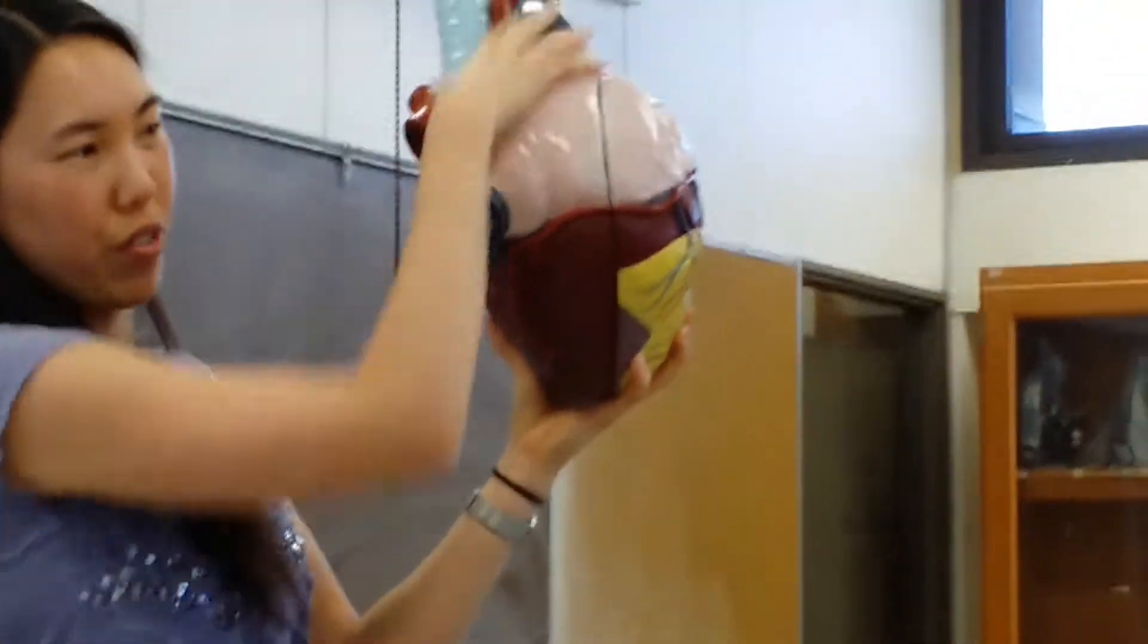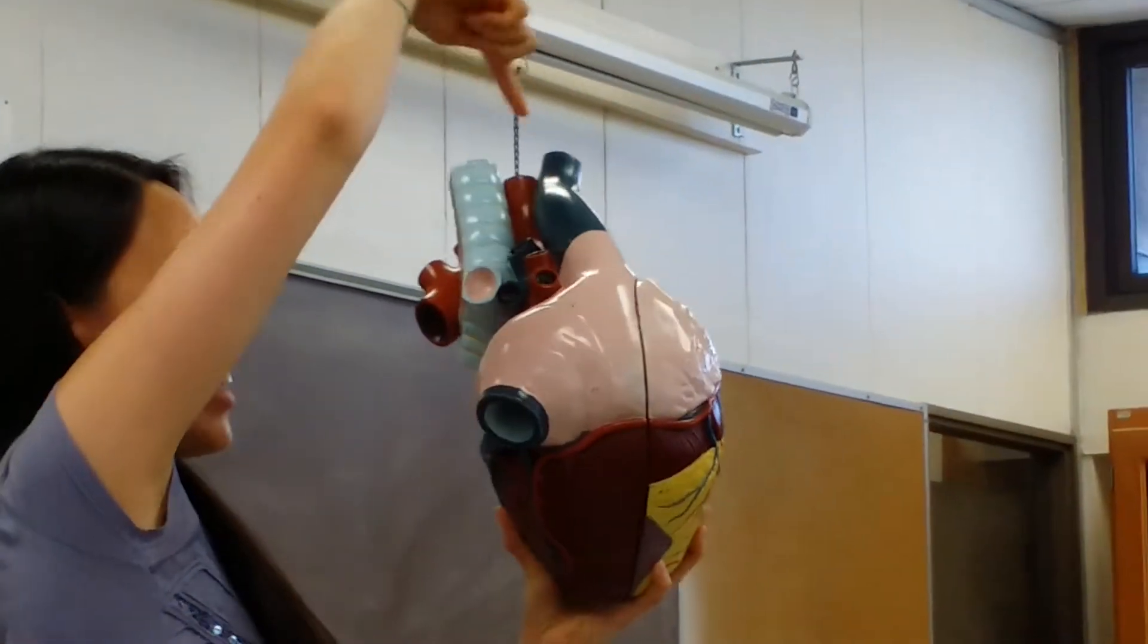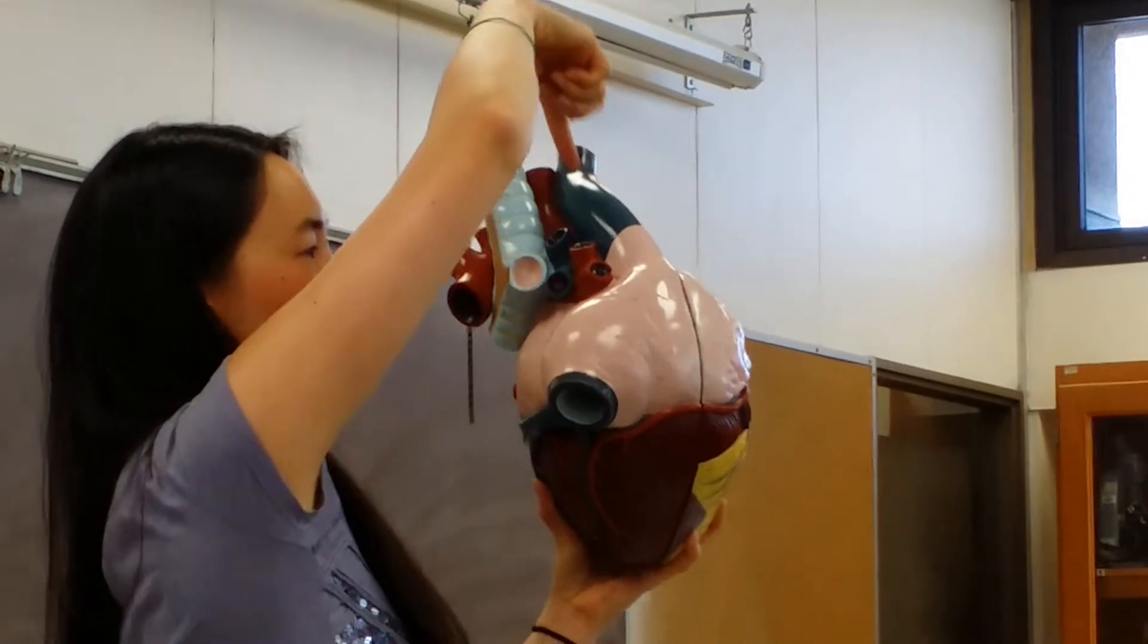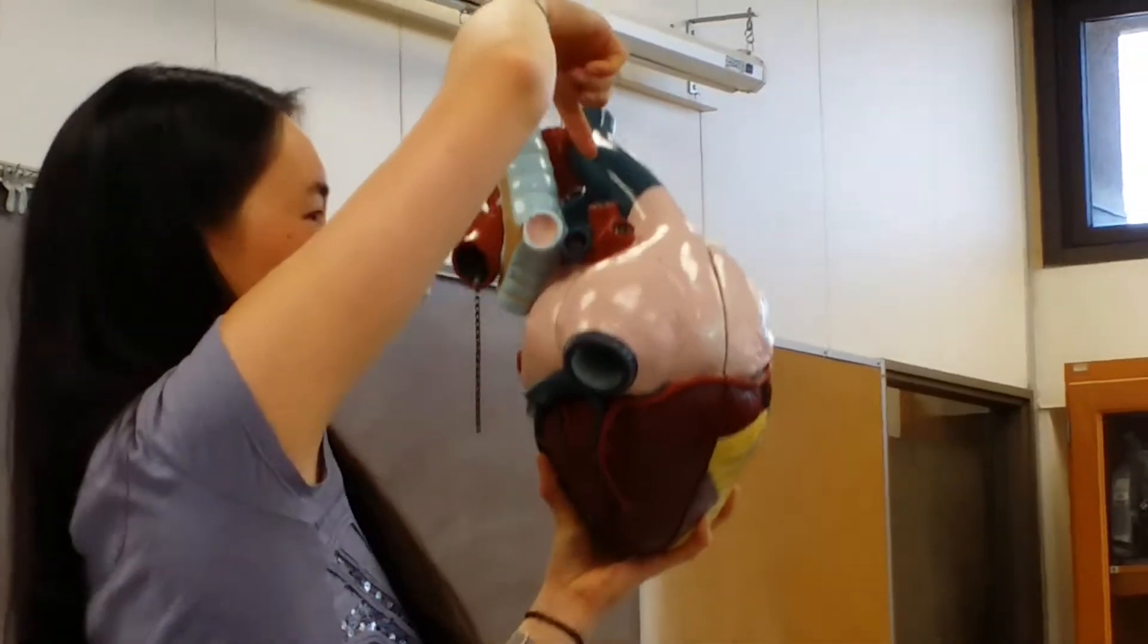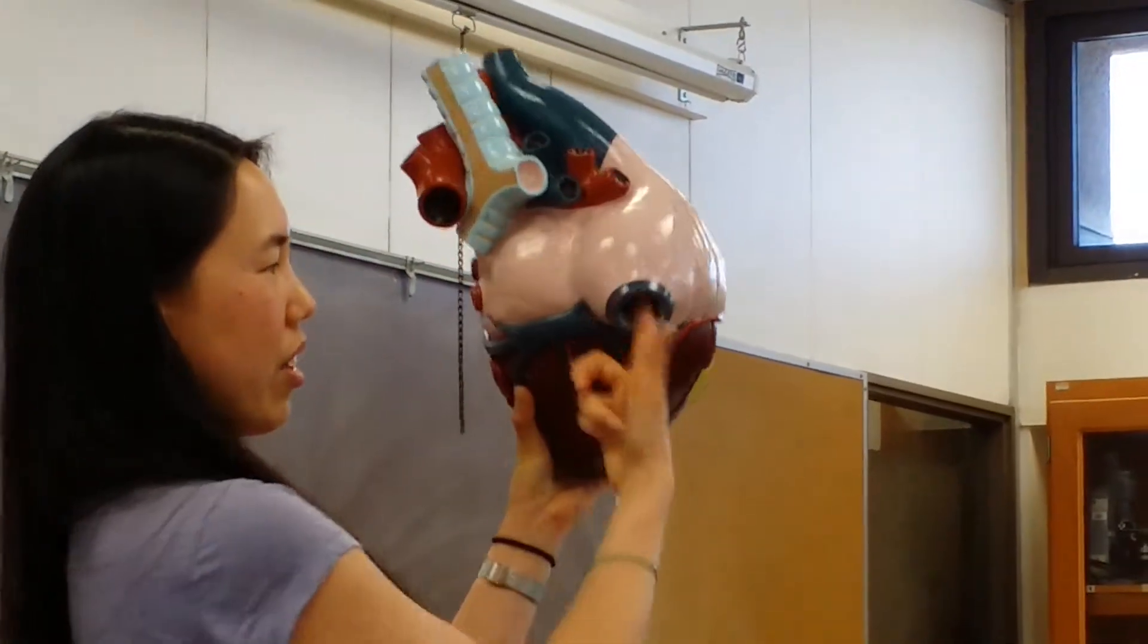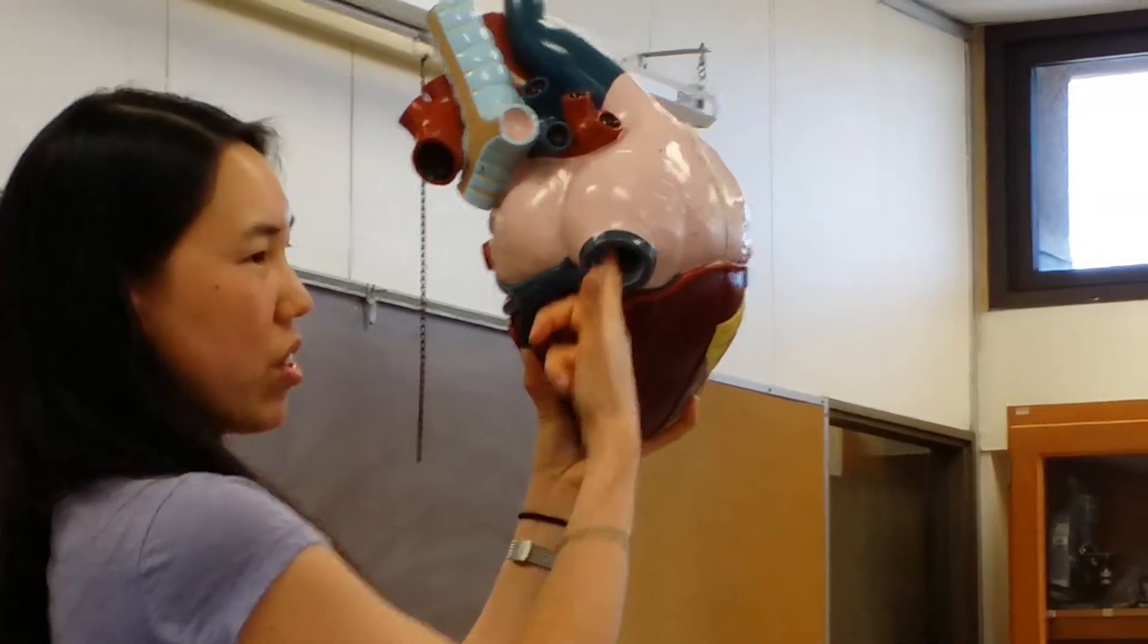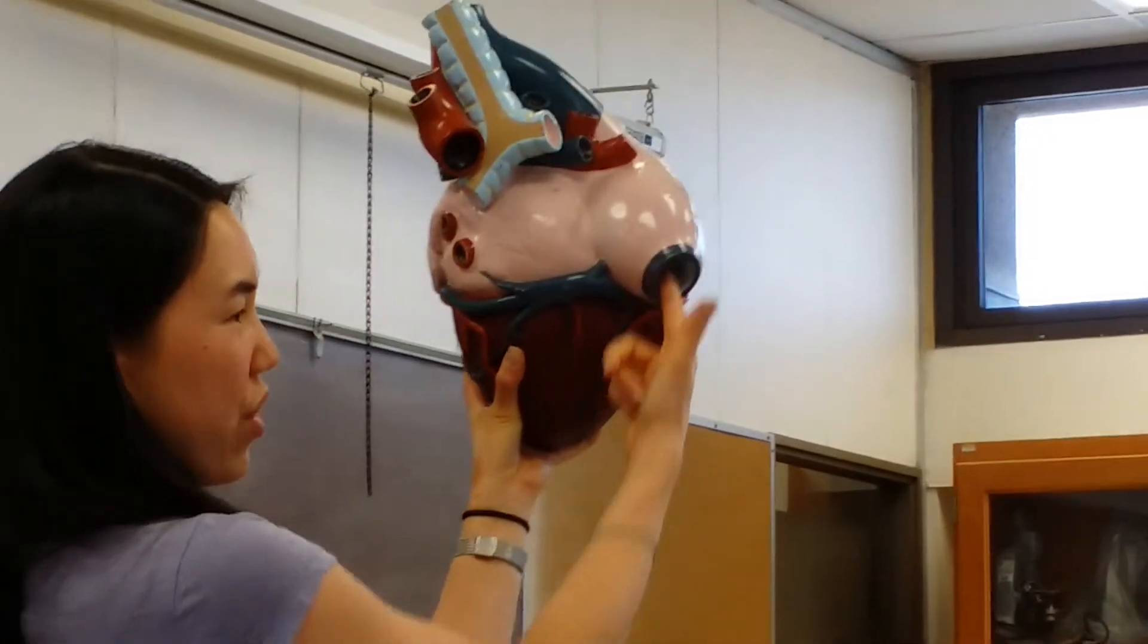Those are your vena cava. So on the very top, you'll find your superior vena cava. Take a look at that. And from the bottom, what do you have? Your inferior vena cava. Look at the bottom and you'll see your inferior vena cava.